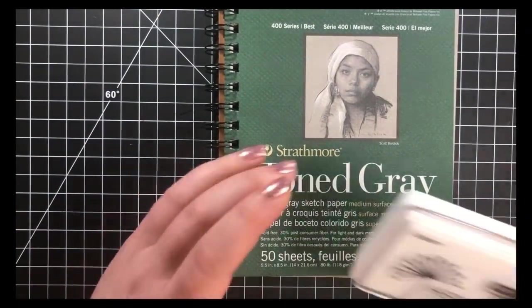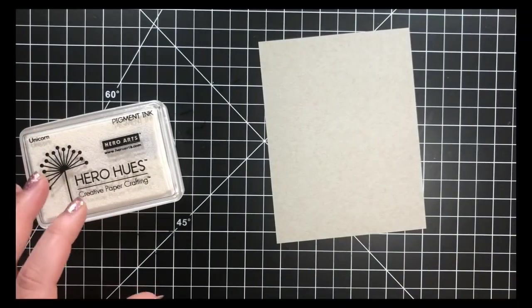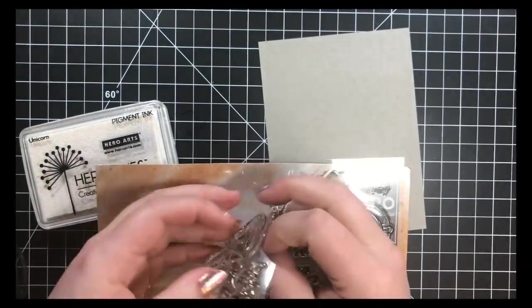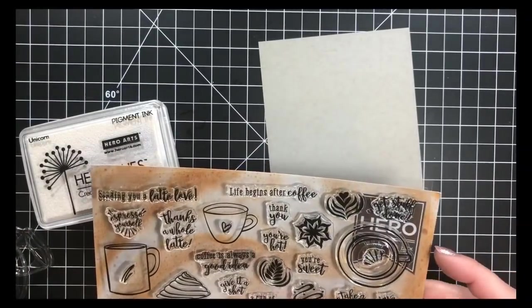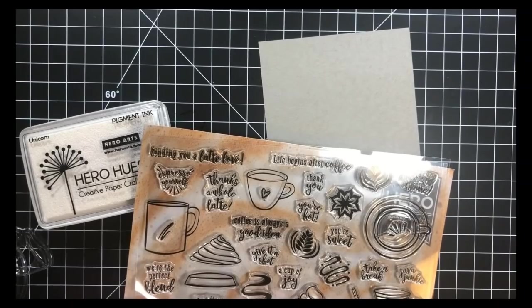Today I'm starting with a piece of this tone gray paper by Strathmore and I'll be using the Unicorn White Pigment Ink by Hero Arts. This is a thinner paper, so keep in mind that you're not going to be able to use this for a card base and sometimes even a card panel without having another layer behind it.